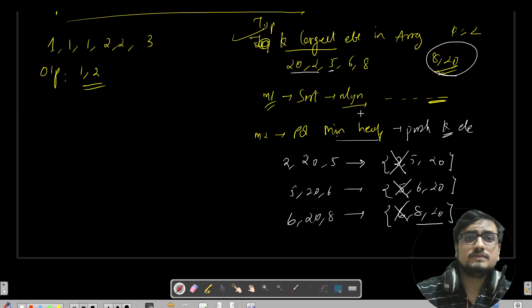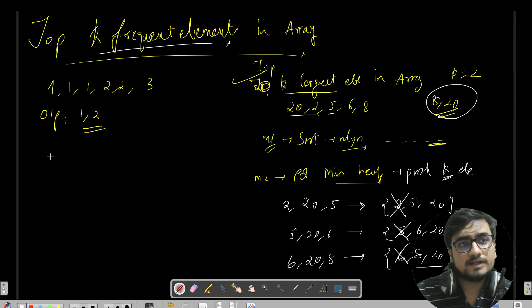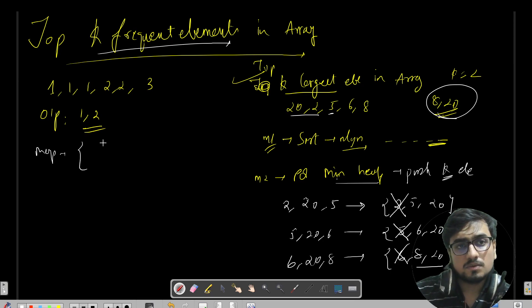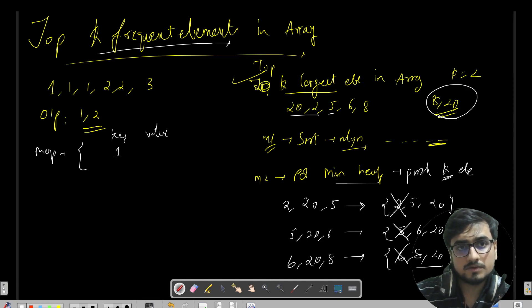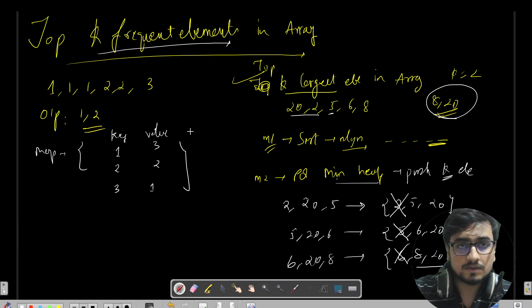Similarly, to find the top K frequent elements, we first need to know each element's frequency. For that we use a map — key-value pairs where keys don't allow duplicates. For example, key 1 has frequency 3, key 2 has frequency 2, key 3 has frequency 1. This is what it looks like in an unordered map in C++ or HashMap in Java.